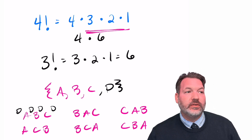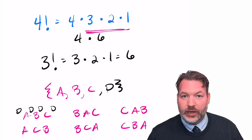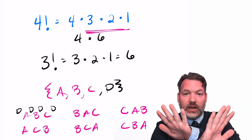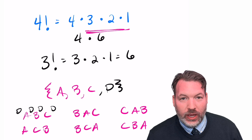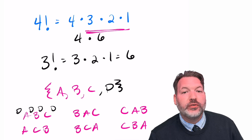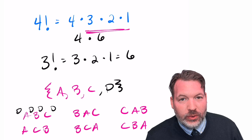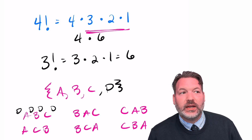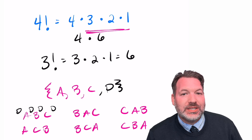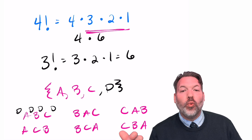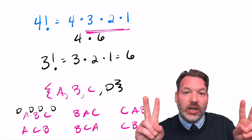For a set with two elements, there are only two possible arrangements: A then B, or B then A. For a set with just one element, A, there's only one way to arrange it: A. But for a set with zero elements — a set we call the empty set — there is in fact exactly one way to distinctly arrange the elements of the empty set. Here it is. You're looking at the one and only way to arrange nothing.